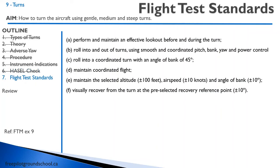For the flight test standards, an effective lookout is critical — make sure the examiner sees you looking out before any turn. You can even involve the examiner by asking if they see anything on their side. On a steep turn, you will be expected to perform a coordinated turn using pitch, yaw, bank, and power control at 45 degrees of bank. You must maintain coordinated flight within plus or minus 100 feet altitude, plus or minus 10 knots airspeed, and plus or minus 10 degrees angle of bank, then visually recover at the pre-selected recovery reference point.